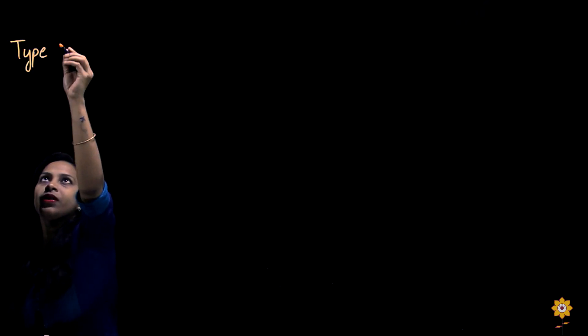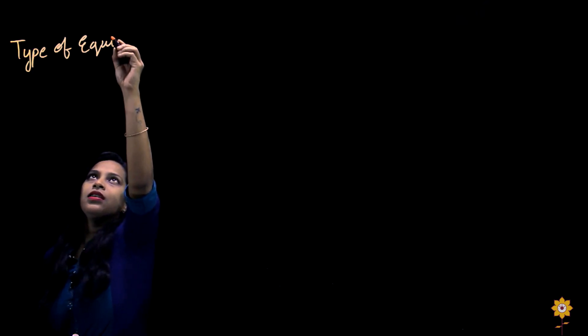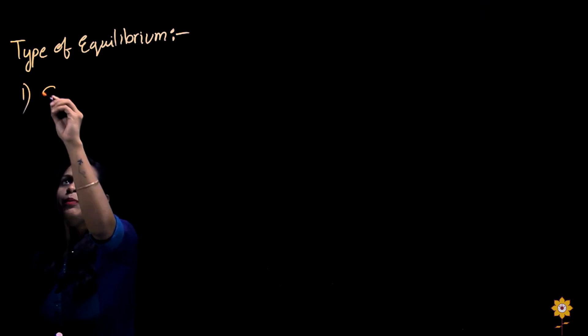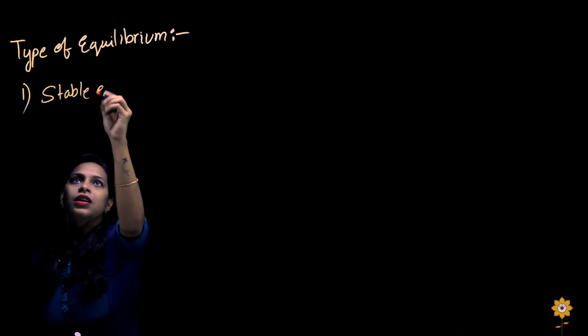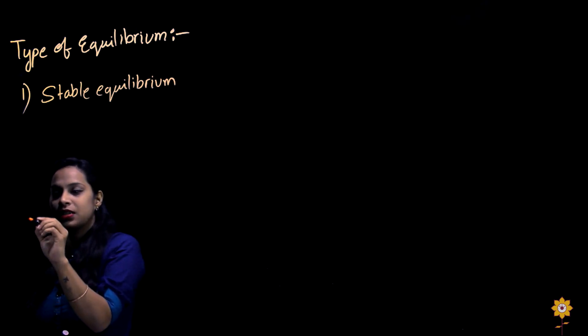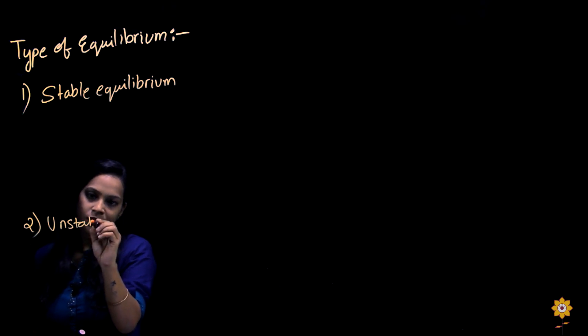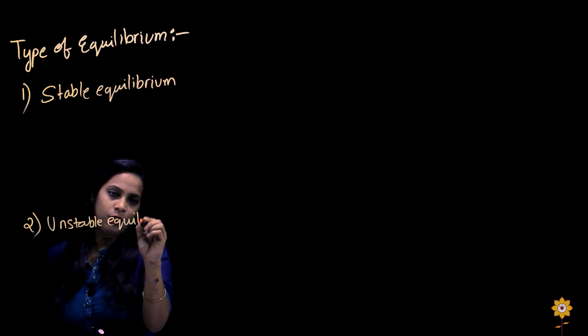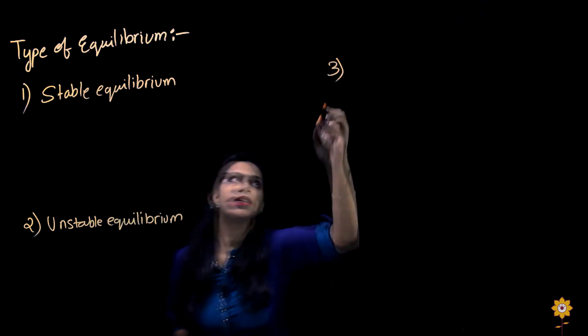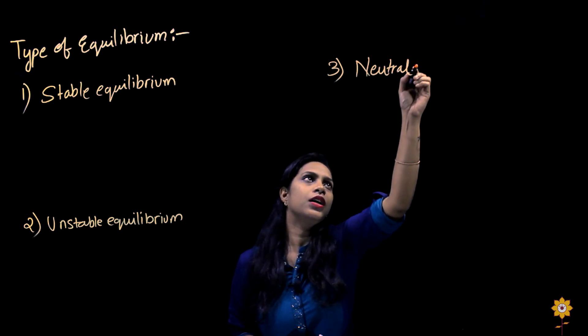Now that we know what equilibrium is and what its conditions are, let us move on to the types of equilibrium. There are in total three types: stable equilibrium, unstable equilibrium, and neutral equilibrium.